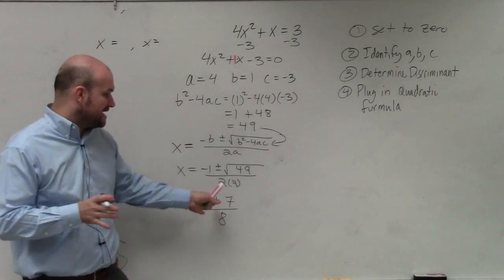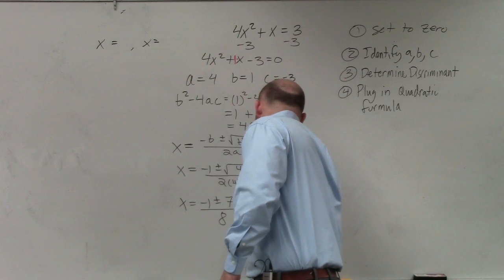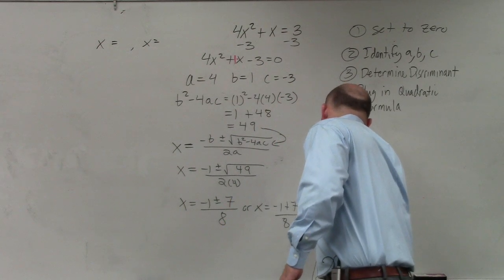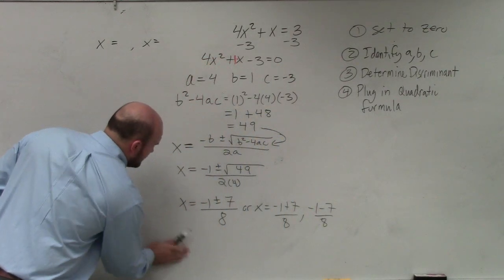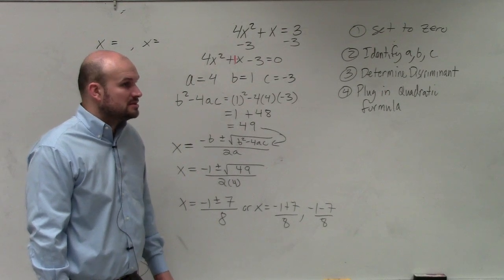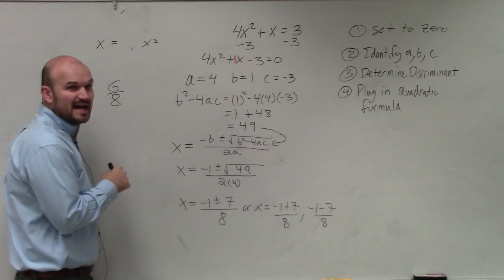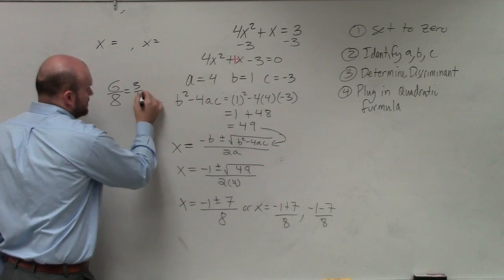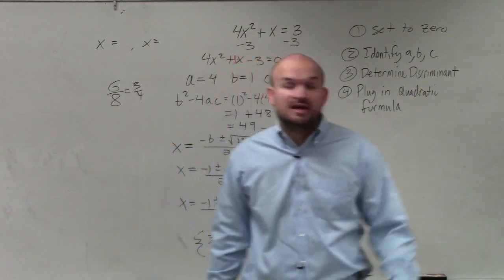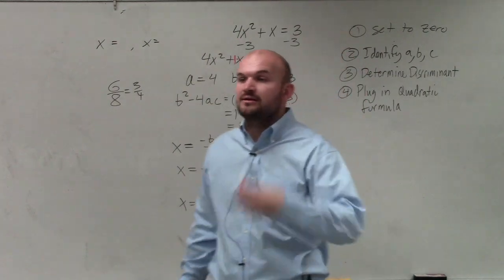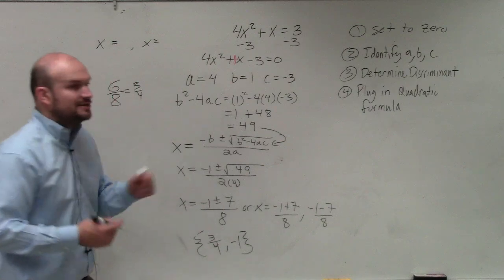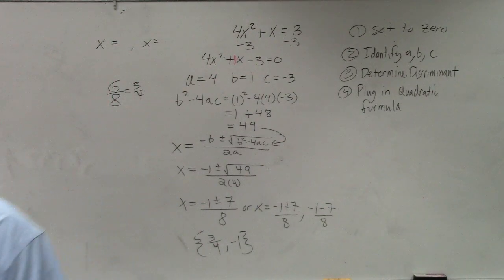Now we're just going to do this. You can separate this into x equals negative 1 plus 7 over 8 and negative 1 minus 7 over 8. So negative 1 plus 7 is 6. 6 over 8, right? And that can be reduced down to 3 fourths. So my solution set is going to be 3 fourths. And then negative 1 minus 7, if you owe me $1 and you borrow 7 more, you now owe me $8. Negative 8 divided by 8 is negative 1. So therefore, there's your two solutions via the quadratic formula. Wasn't that awesome?